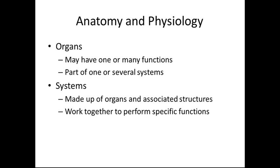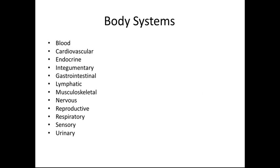Organs can be part of one or several systems. For example, the pancreas is part of the endocrine system as it secretes hormones such as insulin, but it is also part of the digestive system as it creates enzymes to help with our digestive tract. Systems are made up of organs and associated structures working together to perform specific functions, such as the reproductive, endocrine, and immune systems.